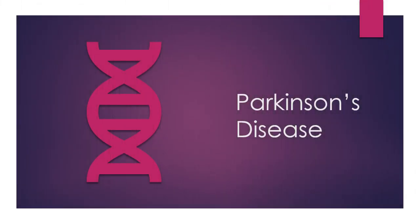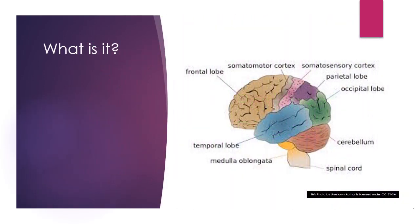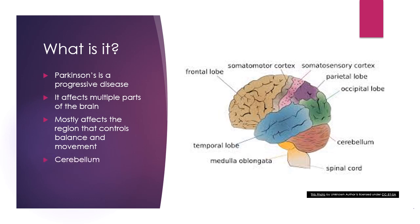We'll be talking about the disease known as Parkinson's disease. Parkinson's is a progressive disease, which means as time goes on it gets worse and worse. It affects multiple parts of the brain but mostly it affects the region that controls balance and movement, known as the cerebellum, which is right here on the brain.